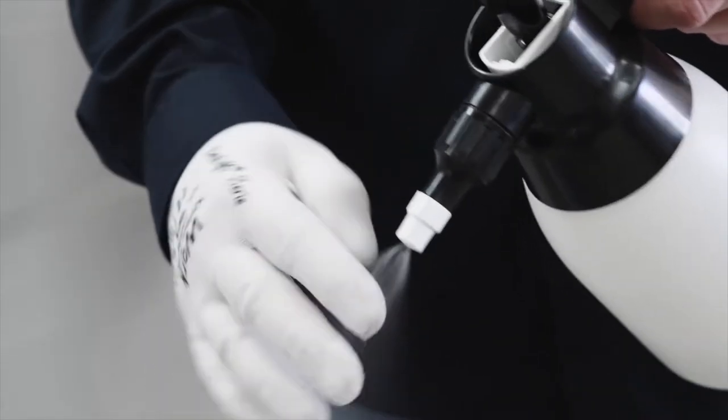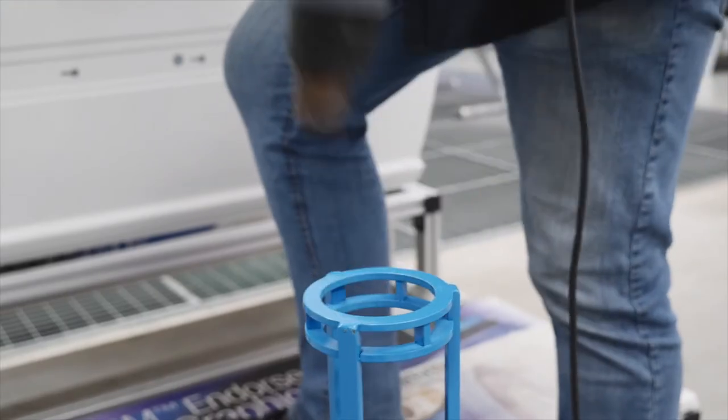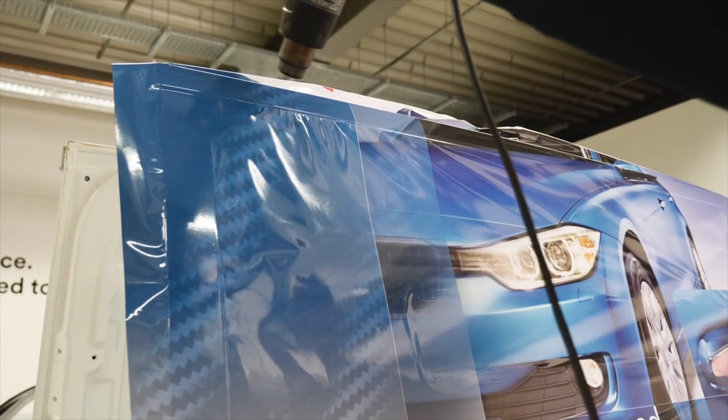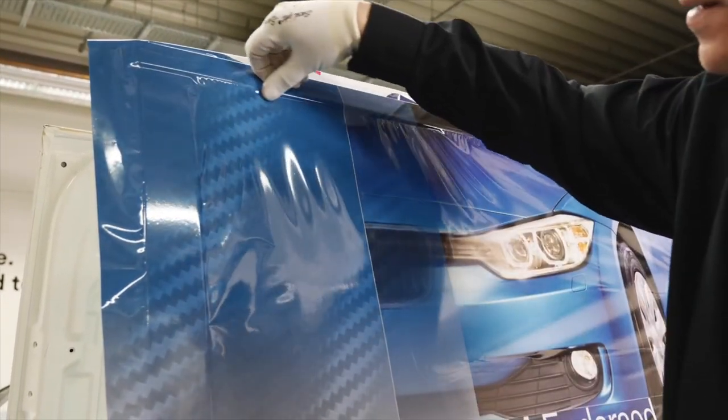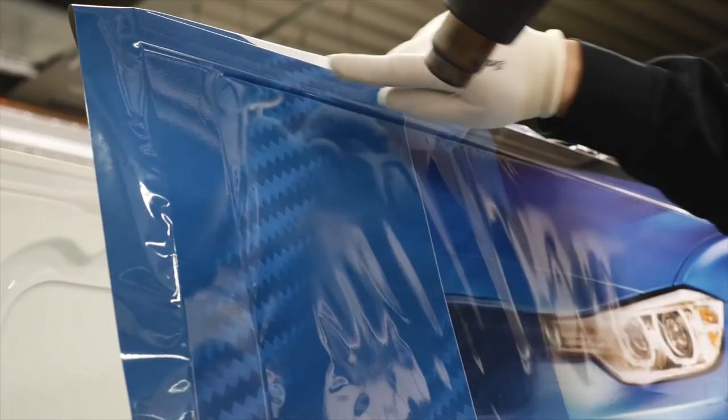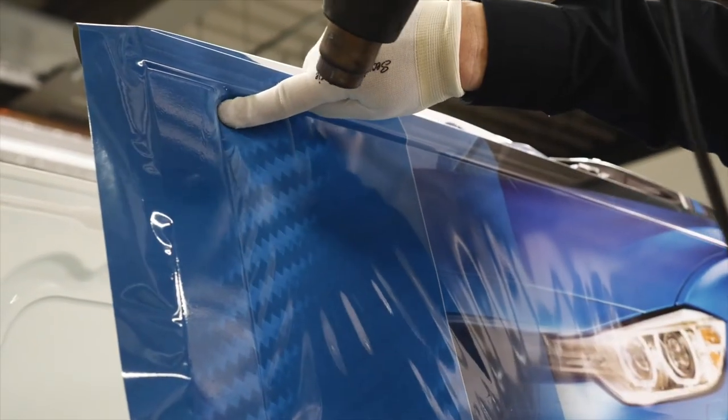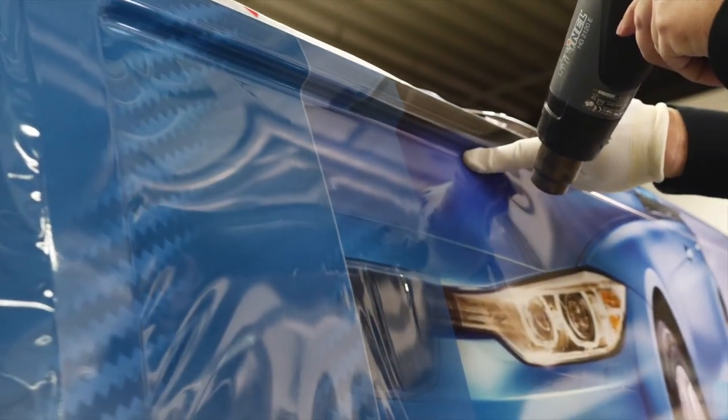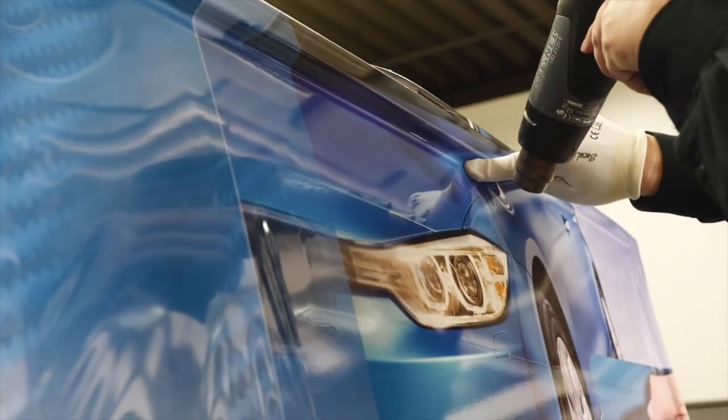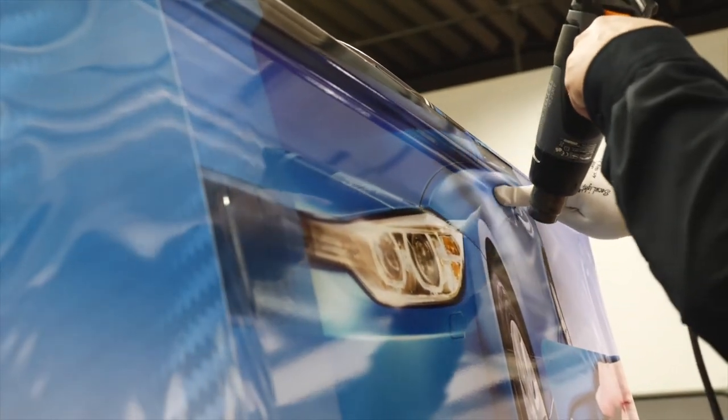Wet your glove with soapy water to reduce any friction with the film. Then heat the film to a surface temperature of 50 degrees centigrade and fix the film with your finger along the contours at the top. Continue warming the film and start application in the corner of the recess. Press the film firmly and continue to apply heat away from the recess to the loose film area.